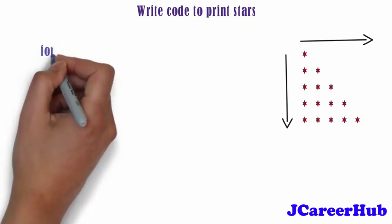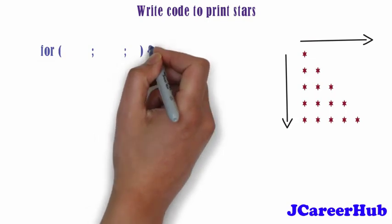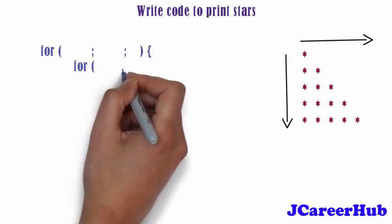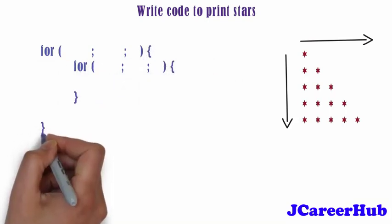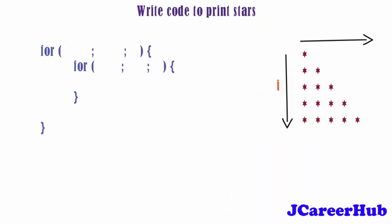So I am using two for loops. One for traversing in vertical direction and another for horizontal direction. I am using I variable to move in rows and J variable to move in columns.